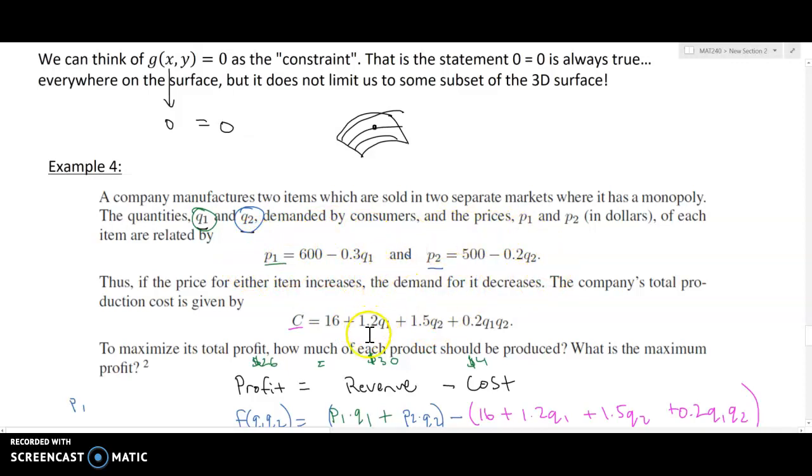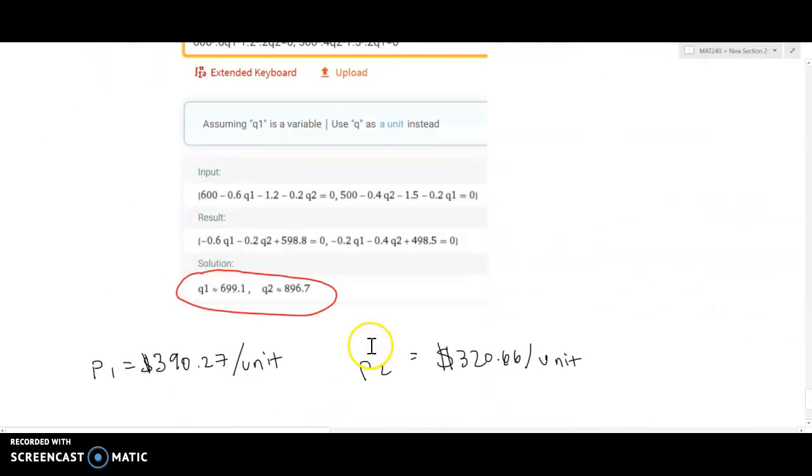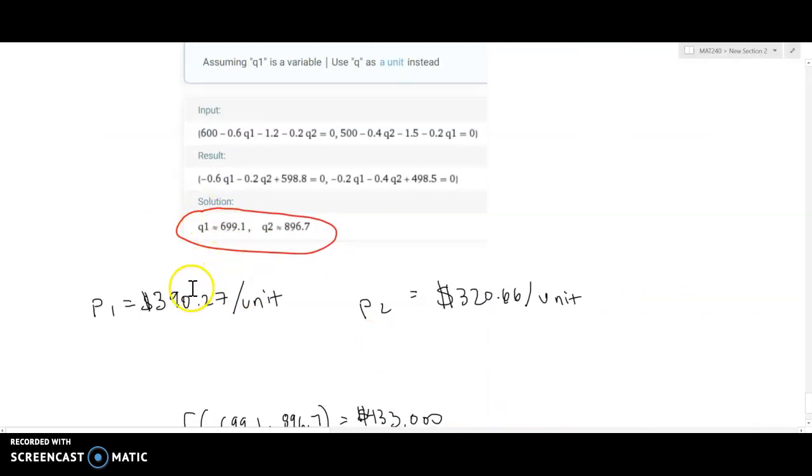Plugging in 699.1 into the p1 equation, we get $390.27 per unit. And if we plug in 896.7 for quantity two, we get that we should sell product two for $320.66 per unit.